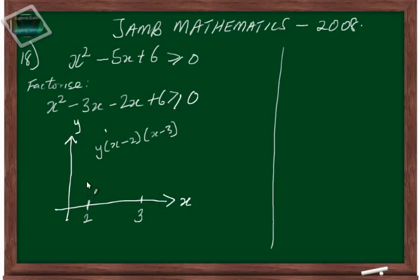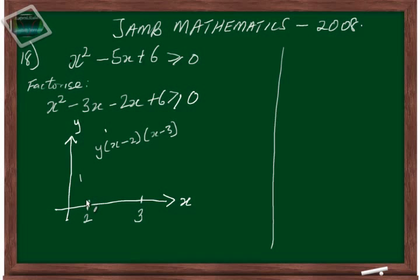To draw our graph, we look at our original quadratic inequality. Since x squared has a positive coefficient, this is a positive x squared graph, so our graph is going to be U-shaped. If it were a negative x squared graph — for example, minus x squared — our graph would be n-shaped. Since it is positive, our graph is U-shaped, crossing the x-axis at points two and three.